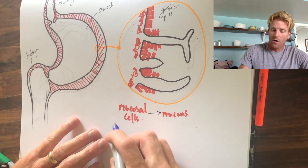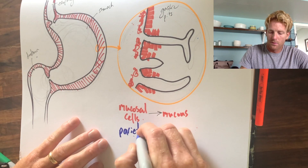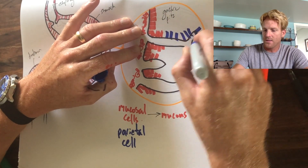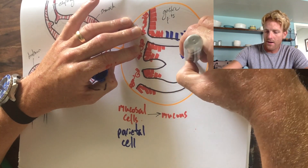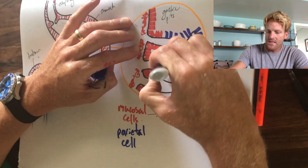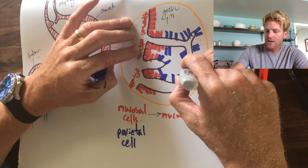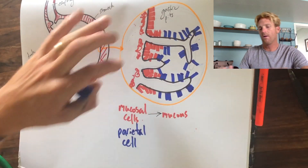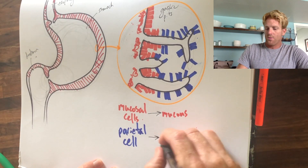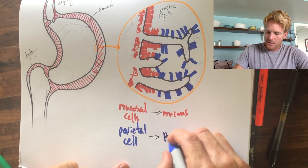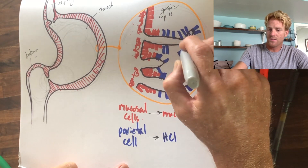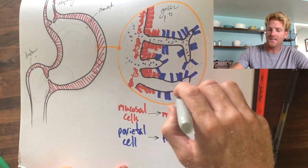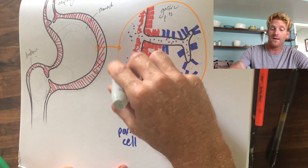Another cell type lining the walls of the gastric pits is parietal cells. These columnar epithelial cells have two main jobs: their primary role is to produce hydrochloric acid (HCl), which creates the very acidic environment of the stomach and helps break down organic molecules. They also produce intrinsic factor, a chemical that allows us to absorb vitamin B12.